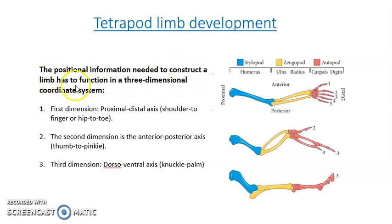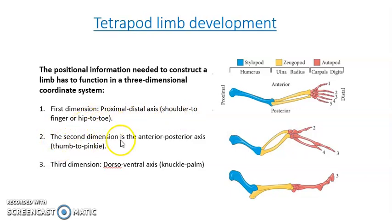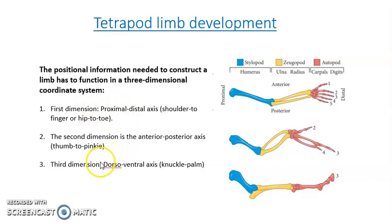The positional information needed to construct a limb functions in a three-dimensional coordinate system. The first dimension is the proximal-distal axis, or shoulder-to-finger / hip-to-toe direction. The second is the anterior-posterior axis, or thumb-to-pinky direction. The third is the dorsal-ventral axis, or knuckle-to-palm direction. All three dimensions must be properly established to form a perfect tetrapod limb.